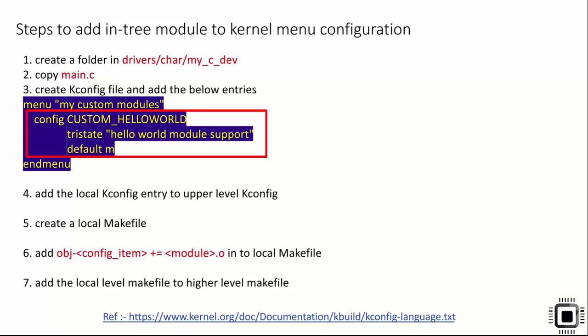Each kernel module can be deselected, selected as a static module, or selected as a dynamic module — meaning it has three states: y, m, or n. You specify this using the keyword 'tristate'. You can give a small description for your custom module, such as 'hello world module support'. The default option — whether y, n, or m — is set using the 'default' keyword, for example 'default m', meaning by default this module will be selected as a dynamically loadable module. This identifier will appear in the .config file after menu configuration.